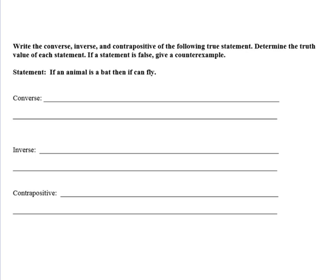So let's take a look at our example. We want to write the converse, inverse, contrapositive for the following true statement. Then we want to determine the truth value of the statement. If a statement is false, give a counterexample. Remember from last section, counterexample proves something is wrong. So here's our statement. If an animal is a bat, then it can fly. What I would recommend, put in your P and Q. So my P here is an animal is a bat. My Q is it can fly.